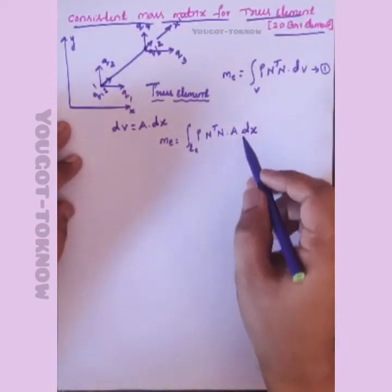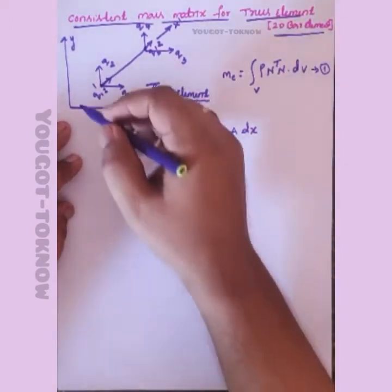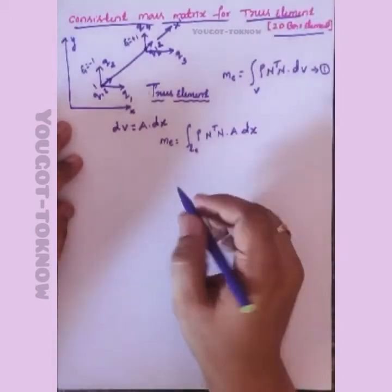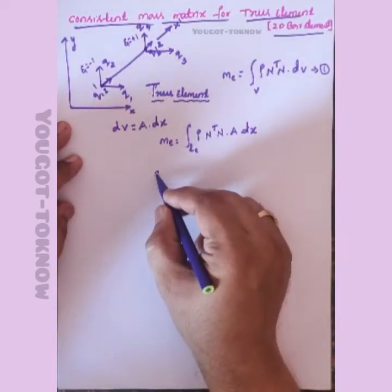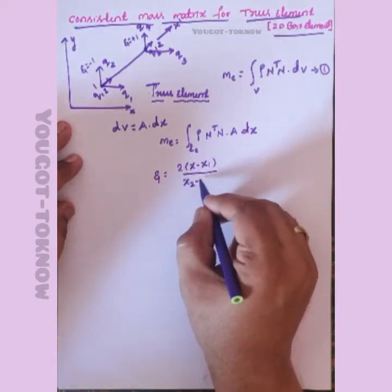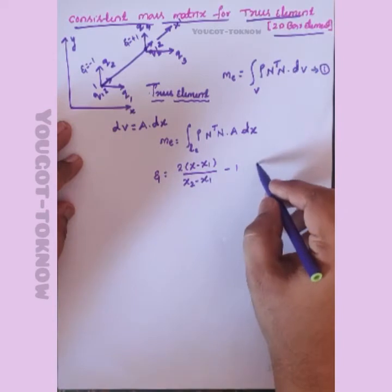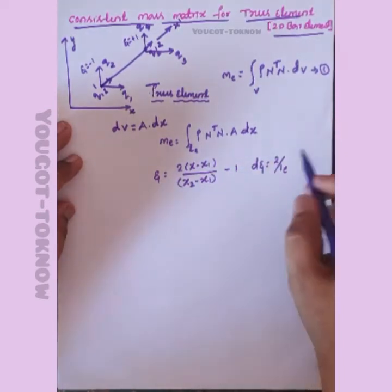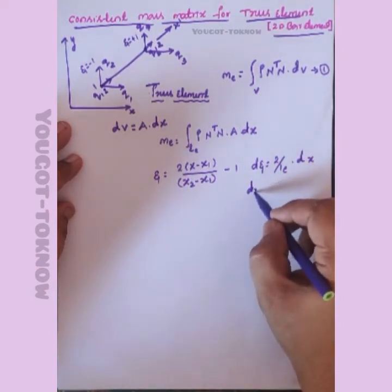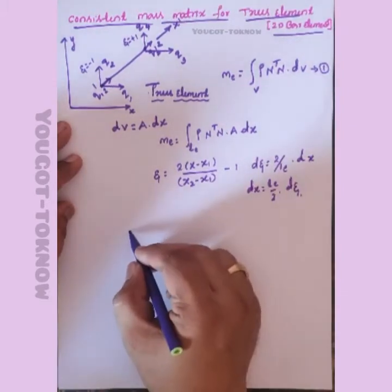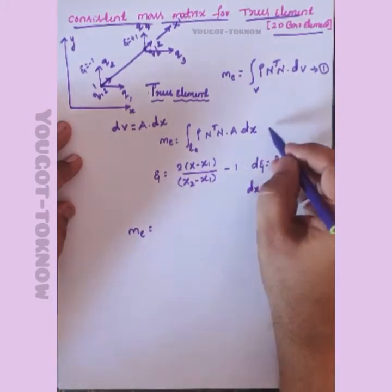Now we want to change the variable so the element varies from zeta equals minus 1 to zeta equals plus 1. To replace dx, we use the relation between zeta and x: 2 times (x minus x1) divided by (x2 minus x1) minus 1 equals zeta. Differentiating, d-zeta equals 2 over Le times dx, so dx equals Le over 2 times d-zeta. Substituting back, rho and A are common, giving rho A Le over 2 outside with limits minus 1 to plus 1.